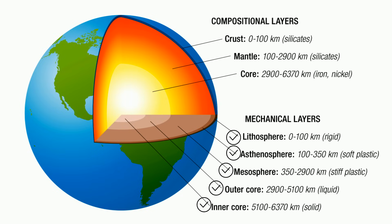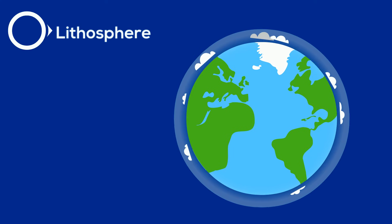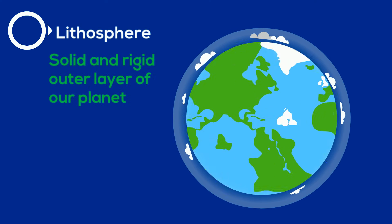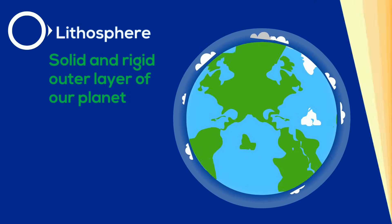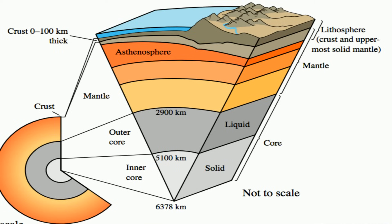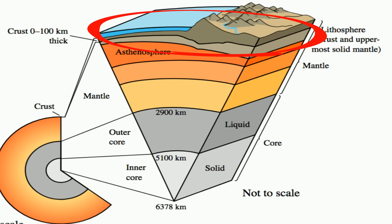The outermost rigid layer of the Earth is the lithosphere. The lithosphere is around 100 kilometers thick and is divided into tectonic plates. The Earth's lithosphere includes the crust and the upper part of the mantle, and it is the hard and rigid outer layer of the Earth.